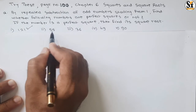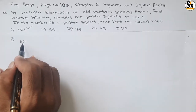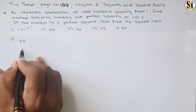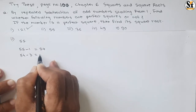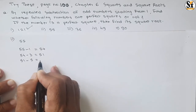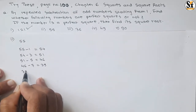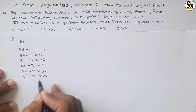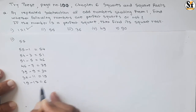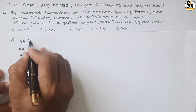Now see the next number, 55. Start subtracting odd numbers: 55 − 1 = 54, 54 − 3 = 51, 51 − 5 = 46, 46 − 7 = 39, 39 − 9 = 30, 30 − 11 = 19, 19 − 13 = 6, then 6 − 15 gives a negative value.